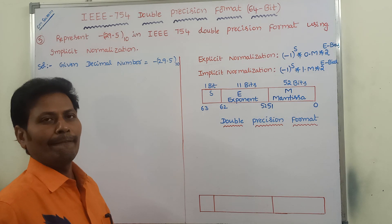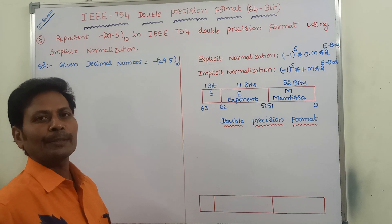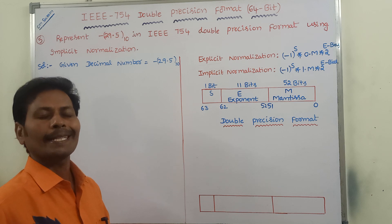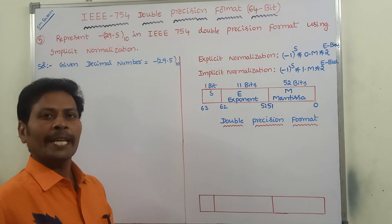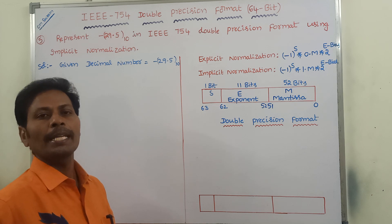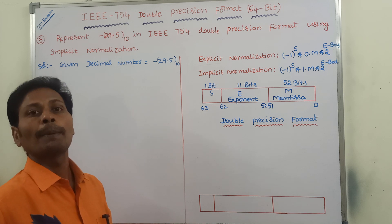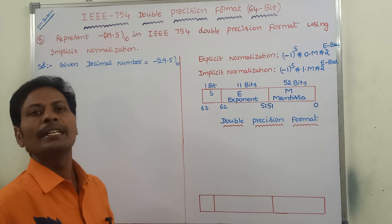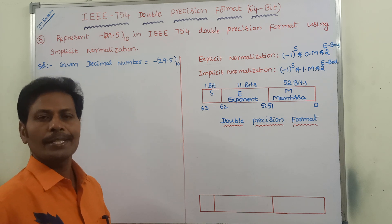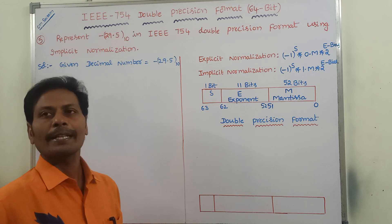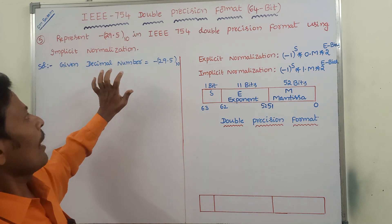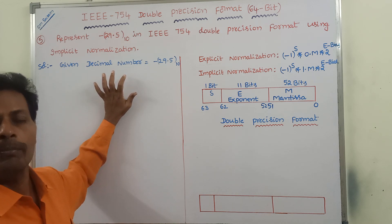Hi friends, welcome back to our YouTube channel. Today we have to discuss about floating point representation using IEEE 754 double precision format in computer architecture course, computer organization course, and computer organization and architecture course. This is the given example problem.